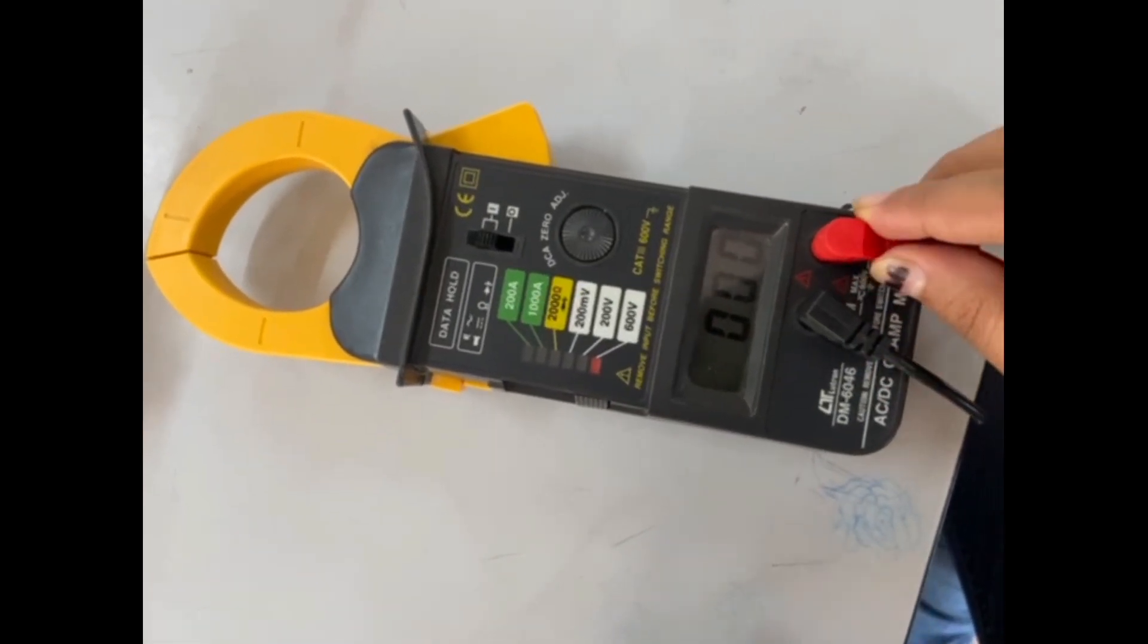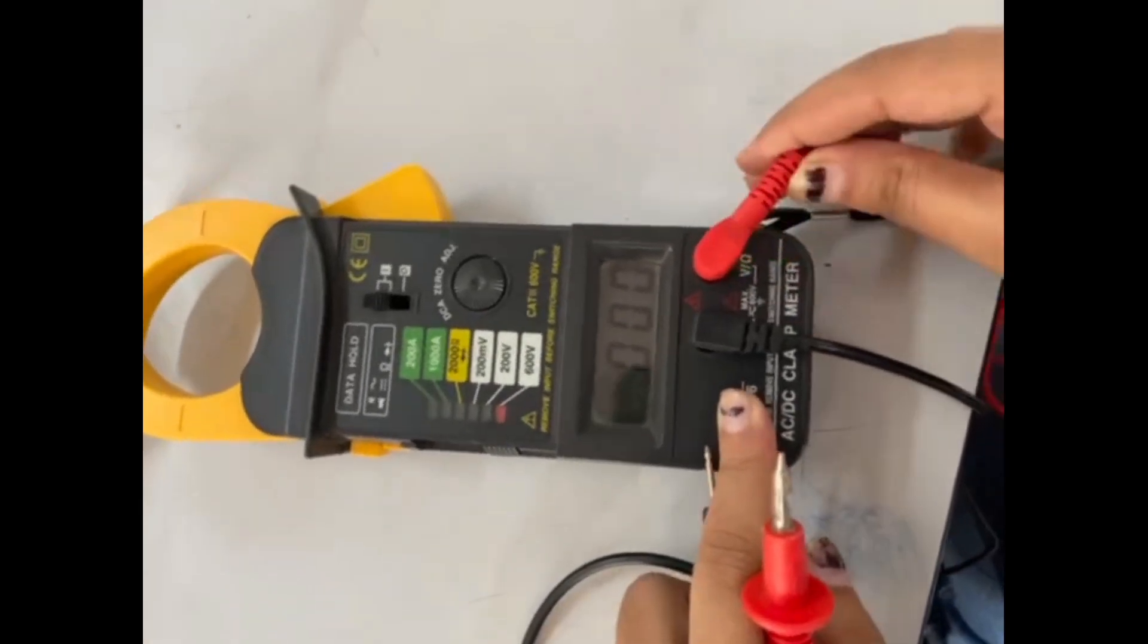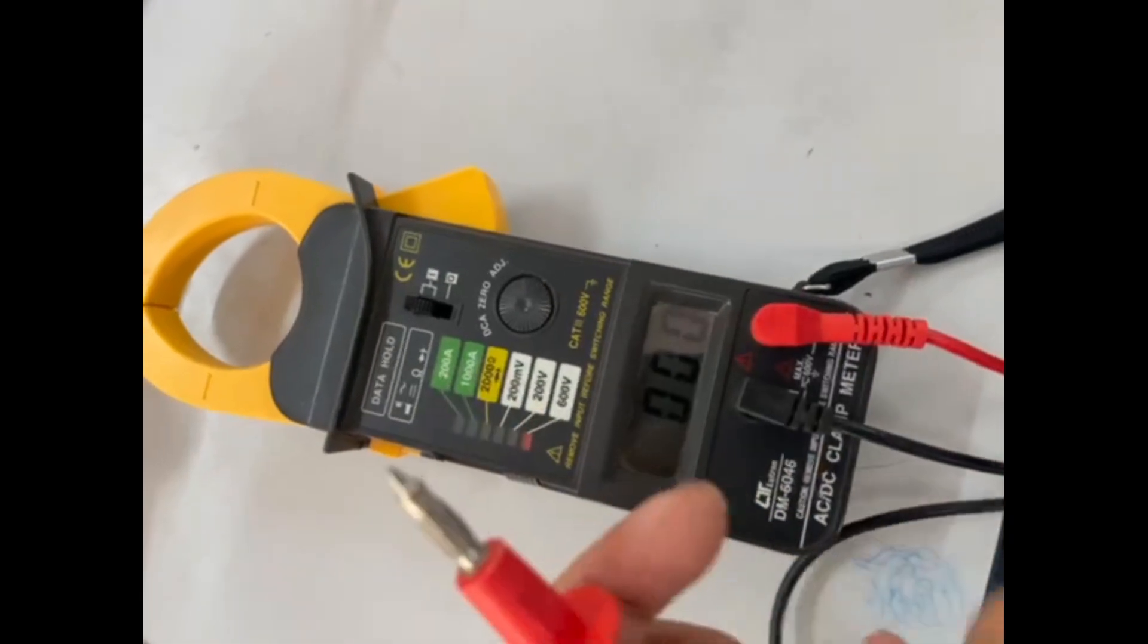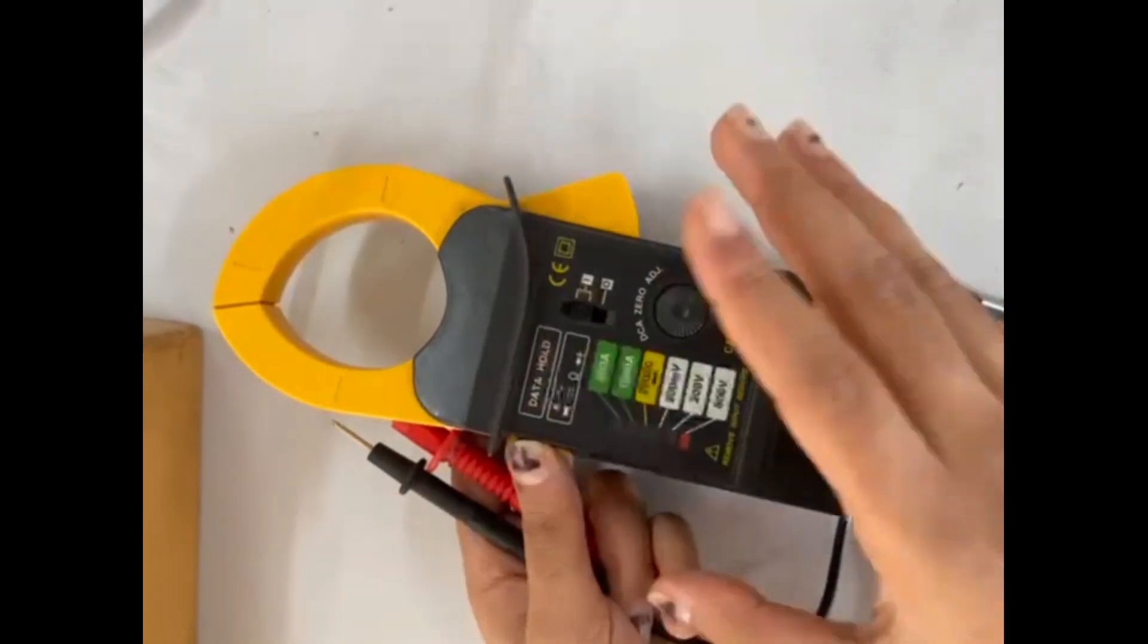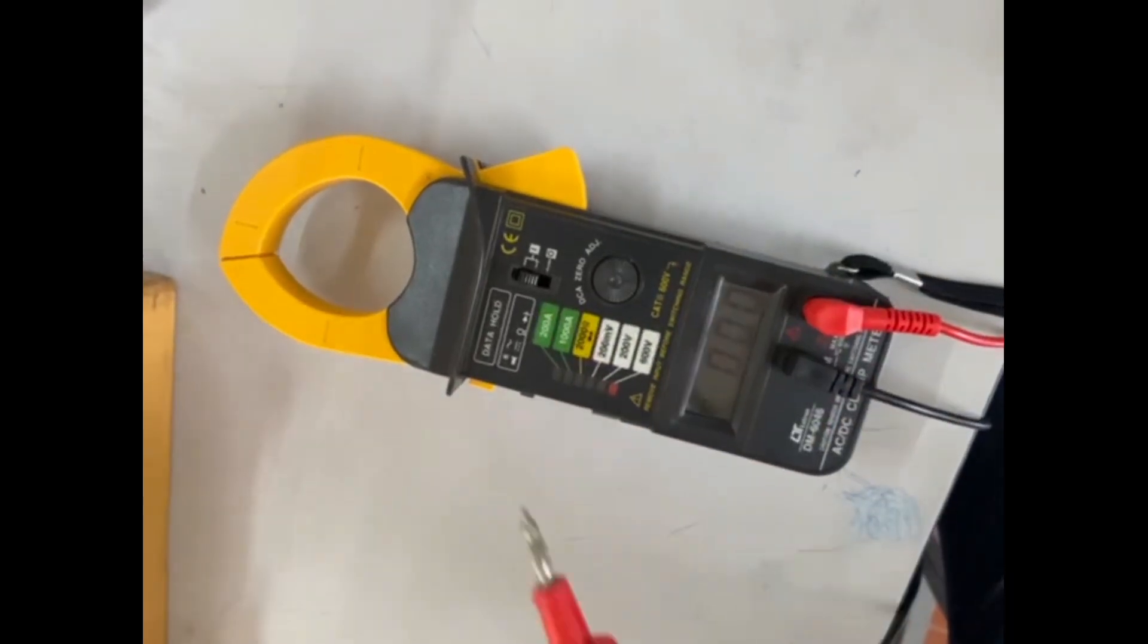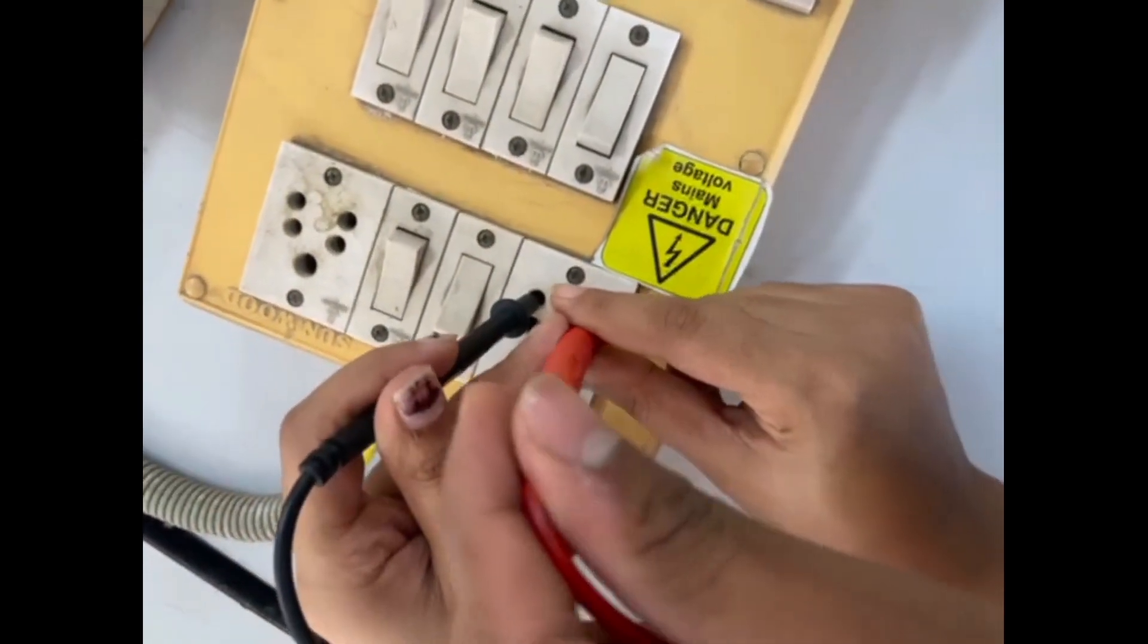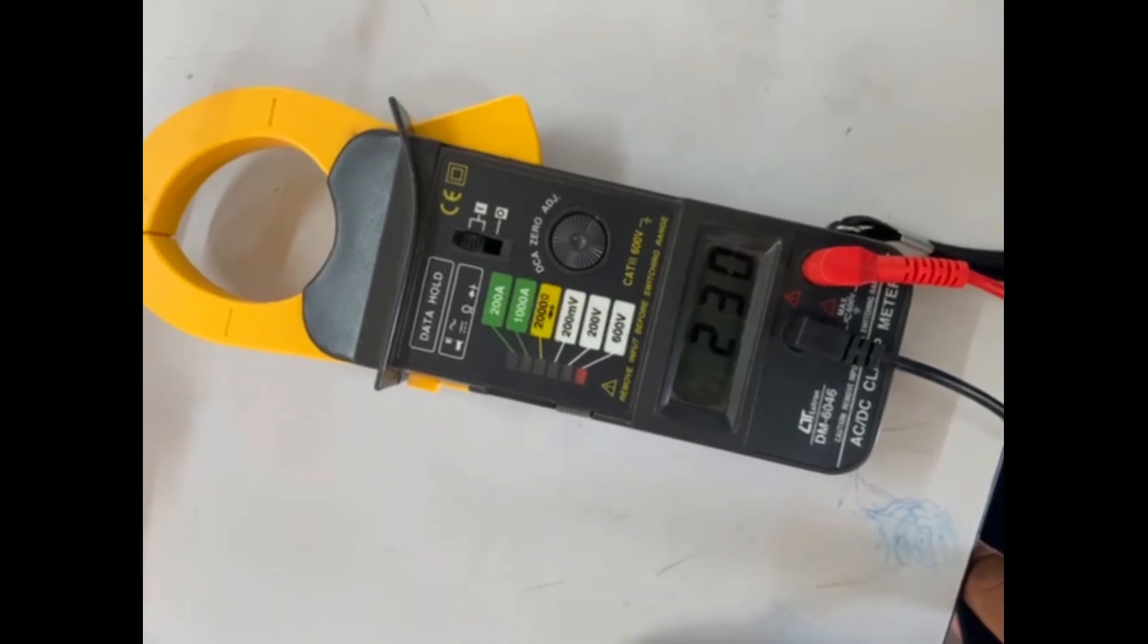Voltage measurement using clamp meter is supposed to be done by using these probes. The red one is connected to the voltage terminal and the black one is supposed to be connected to the common terminal. You will have to set it on voltage parameter using this slider. Depending on your setup you can set it on various limits. We have set it on 600 volts because our setup will not go beyond that. Now we are putting the probes in the socket of the board which should show somewhere near 200 volts. It's showing 230.